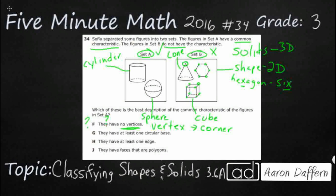So let's see what we have for G, H, and J. Set A has at least one circular base. Well, it does have a circular base here, but you know what? It does not work because, look, there is no circular base on our sphere. So that is not true for A.